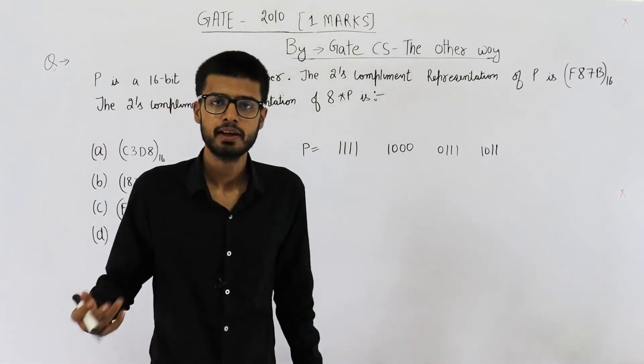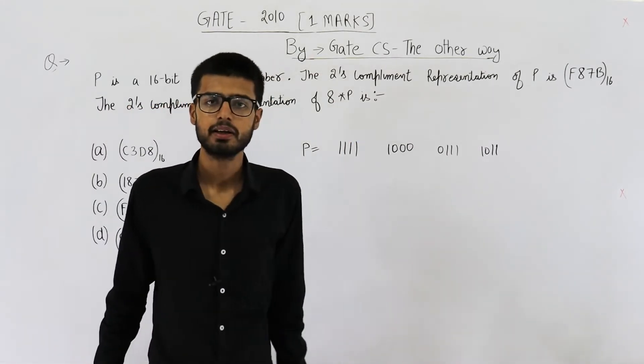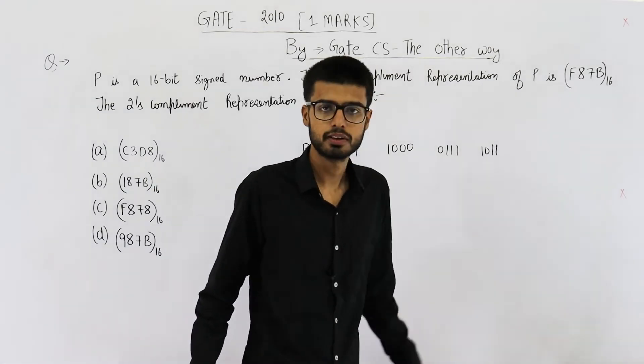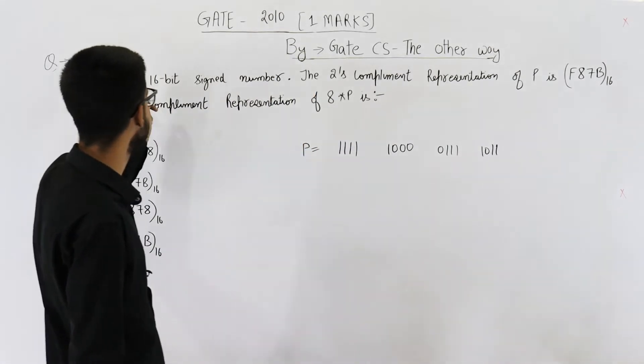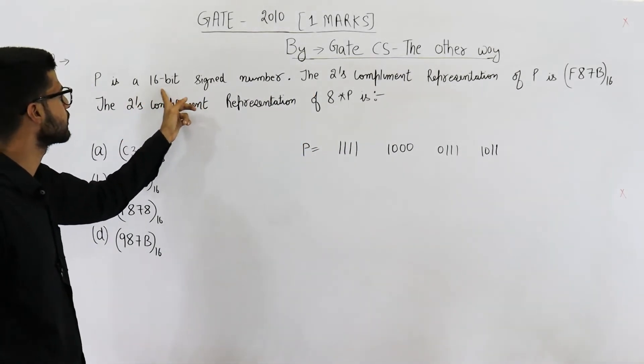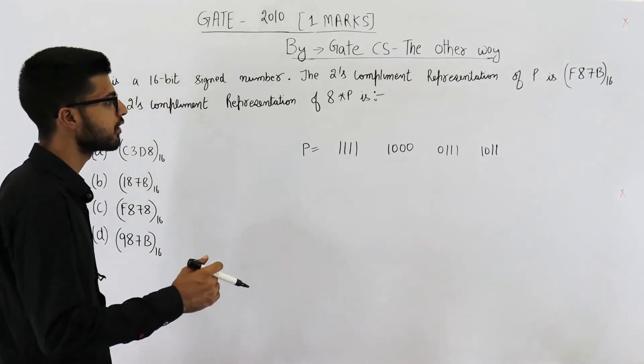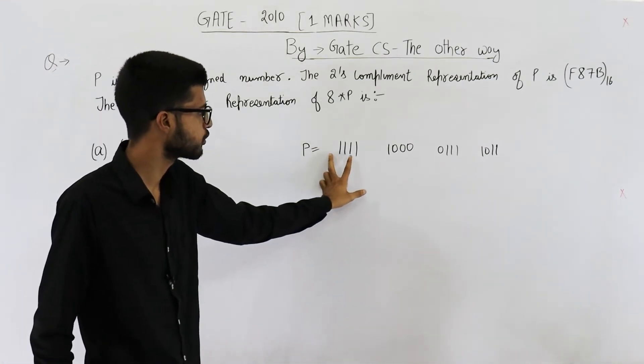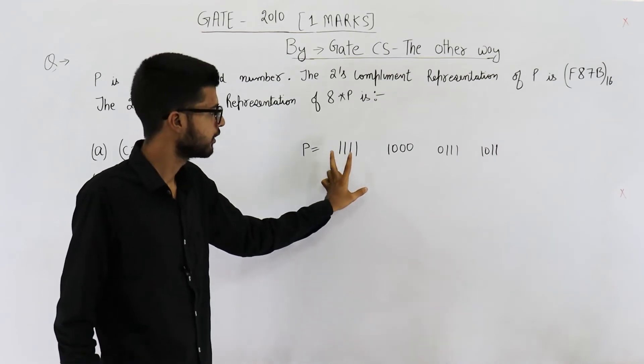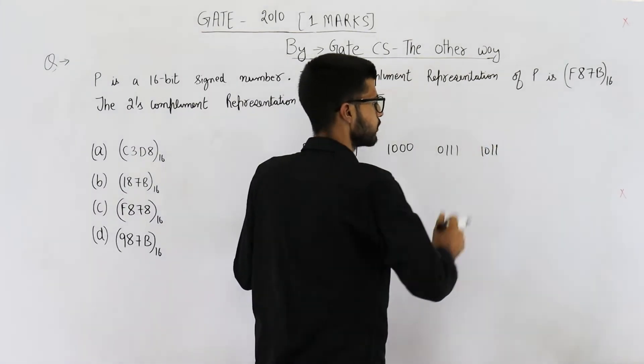Multiplying this number by 2 three times or simply multiplying by 8 means adding 3 zeros here. But the thing is we need to keep it in 16 bits only. So we will be performing a shift. That means these 3 bits will be neglected and we will add 3 zeros here.